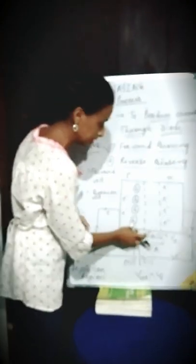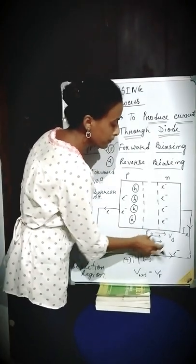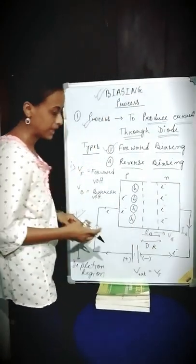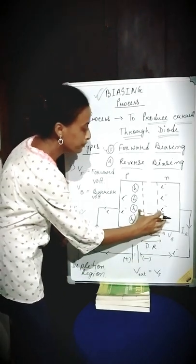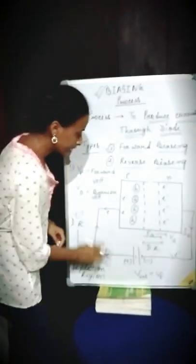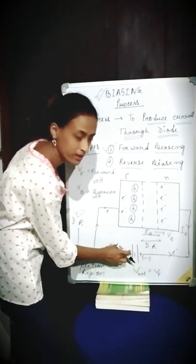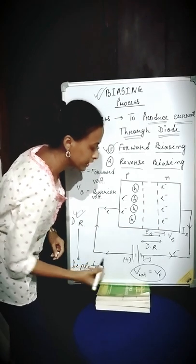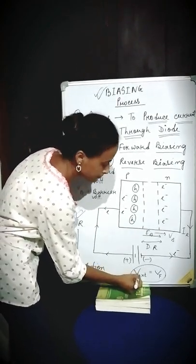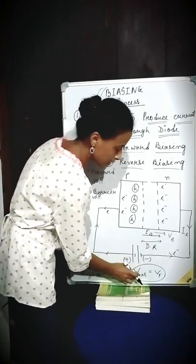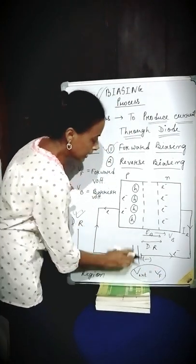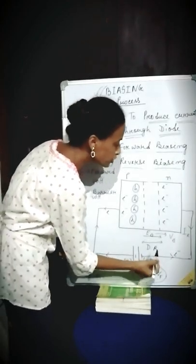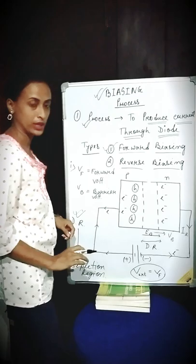We also notice that due to this barrier electric field, there is a development of potential known as barrier potential throughout this depletion region. Now, what happens when a PN junction diode is connected with the help of some external wires to an external battery or to an external voltage — which here I am taking as VEXT or VF — then this externally applied voltage is going to reduce this barrier potential.